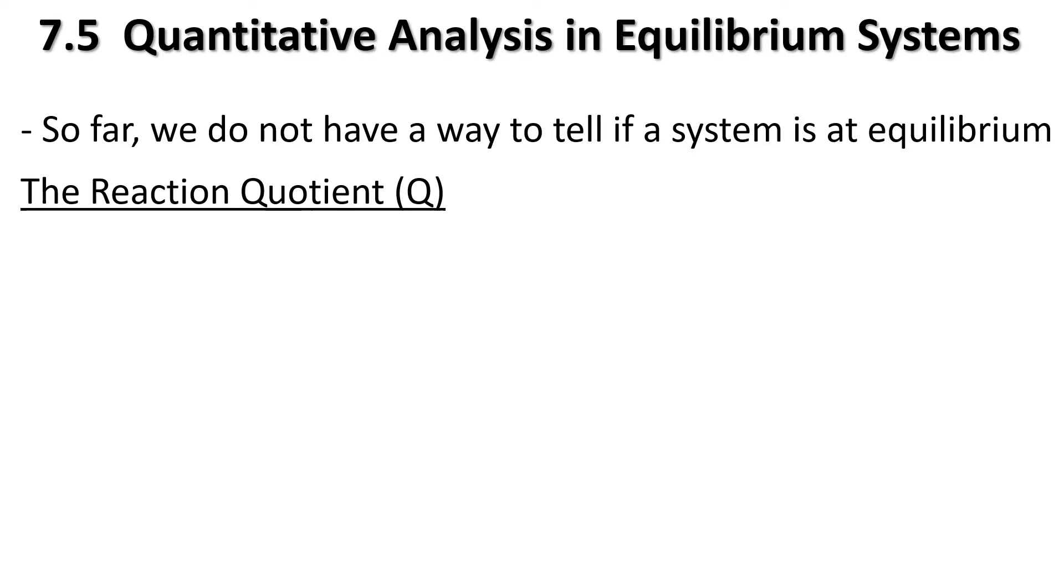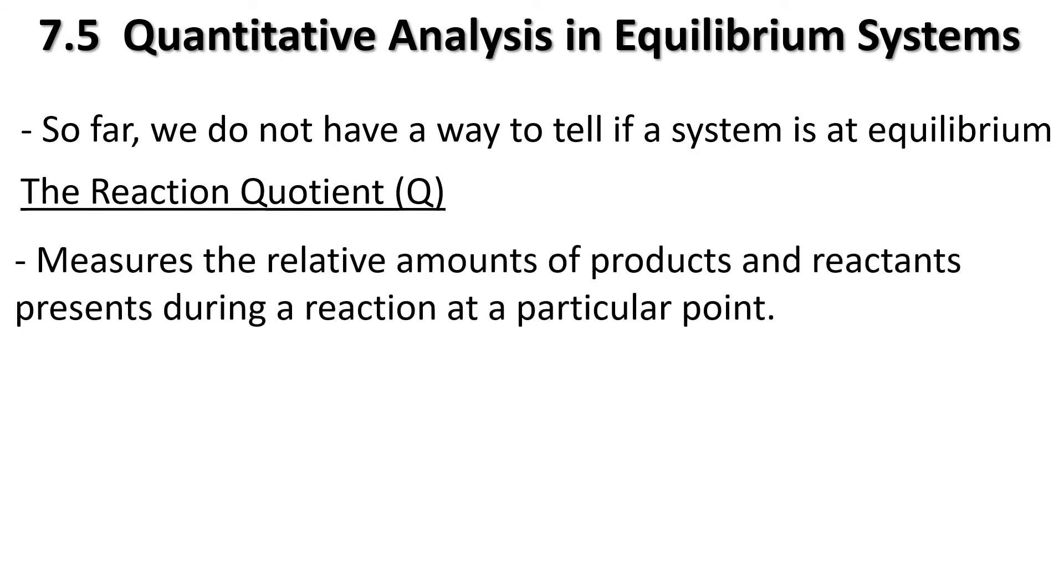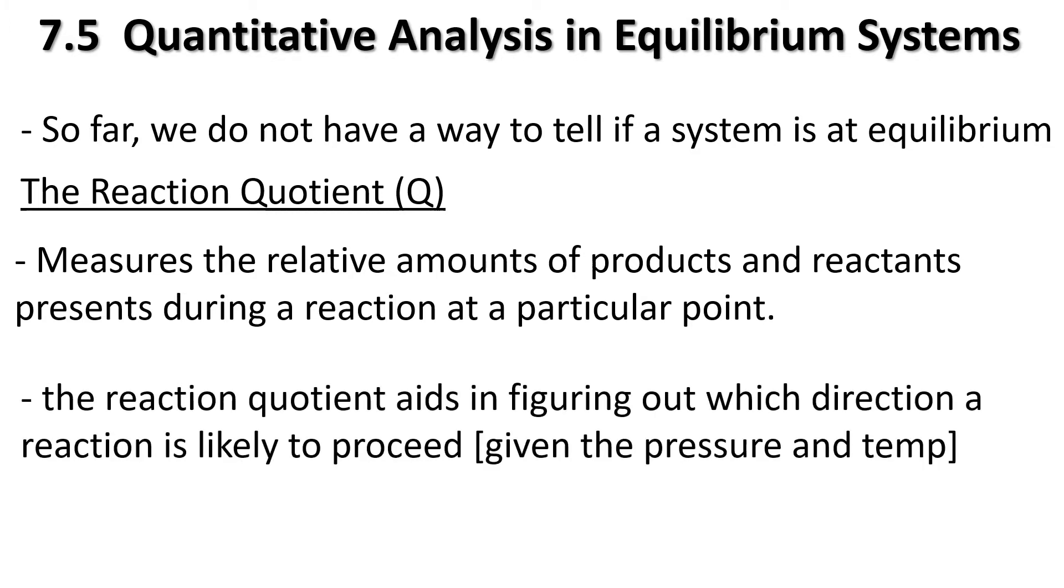So what we're introducing now is something called the reaction quotient, which is Q. This is going to help us determine what we just discussed there. It's going to measure the relative amounts of products and reactants present during a reaction at a particular point, and the reaction quotient will aid in giving us a direction that is likely to proceed at a given pressure and temperature, and we'll try to omit the pressure and temperature for these questions.